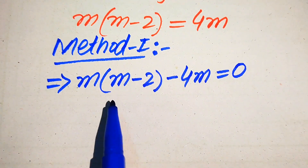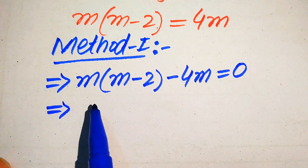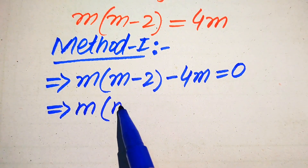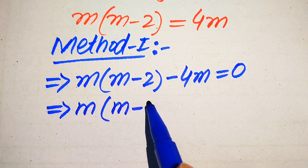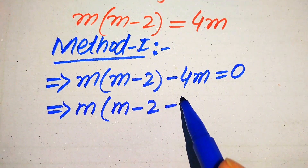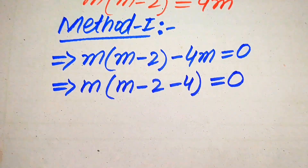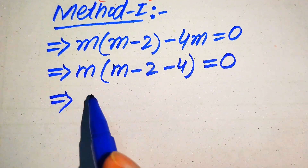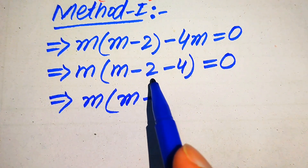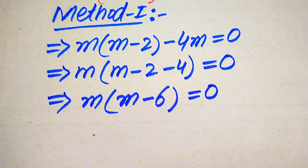In the next step, both terms involve m, so m is a common factor. When we take out common m, we get m times of m minus 2, and from the second term taking out m we get minus 4, so this equals 0. Combining like terms: m minus 2 minus 4 becomes minus 6, giving us m times of m minus 6 equals to 0.